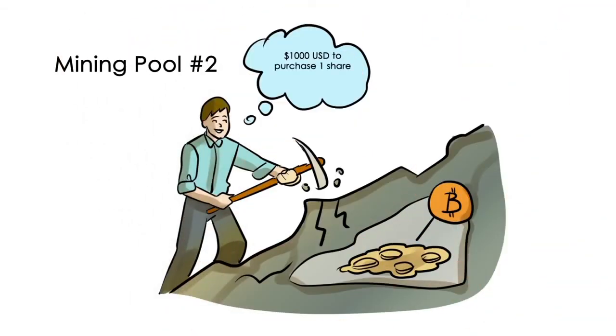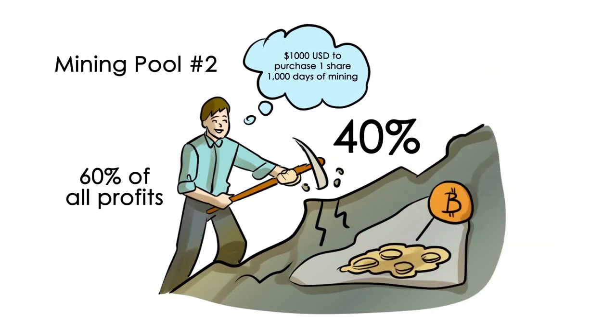Mining pool number two: $1,000 US dollars to purchase one share that pays you for 1,000 days of mining. 60% of all profits will be paid to you on a daily basis, and another 40% will be used to help you purchase additional shares in this mine.